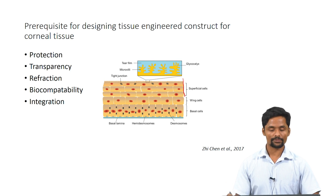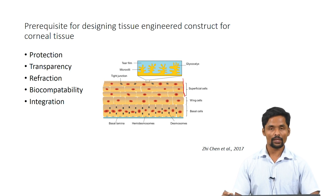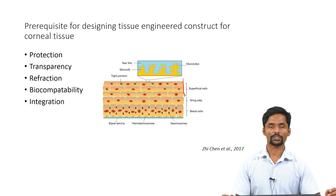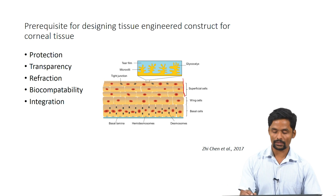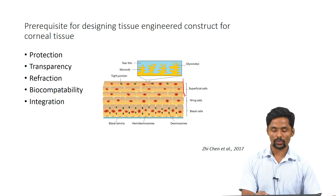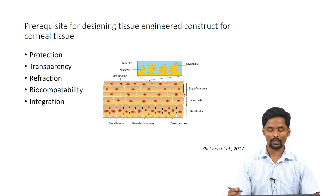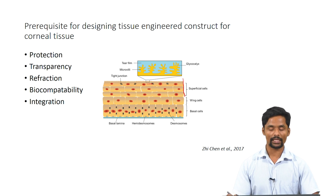Let us begin with prerequisites for designing a tissue engineering scaffold for corneal tissue. The first prerequisite is protection. As we know, the eye is exposed to the external environment and must be protected from bacterial and other microbial infections. The outermost epithelial layer contains tight junctions and microvilli, which prevent microbial invasion.